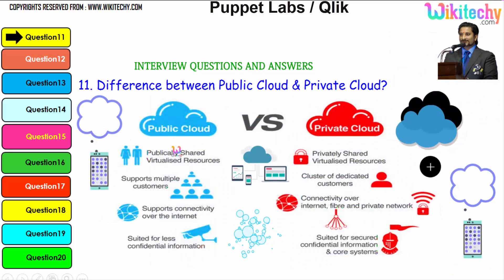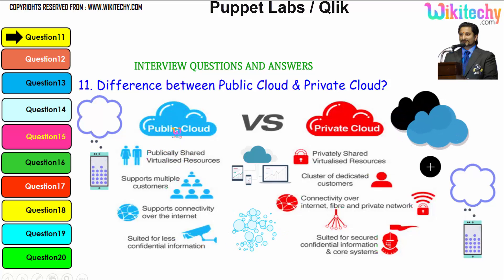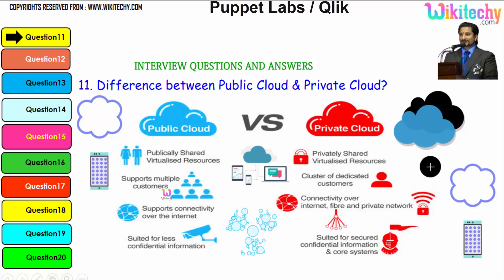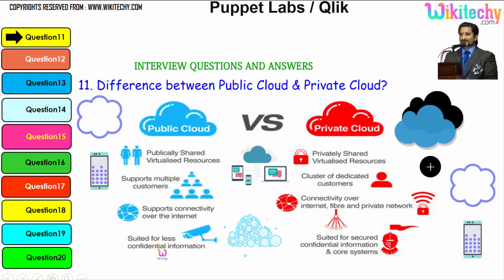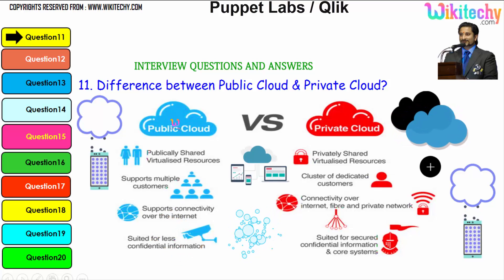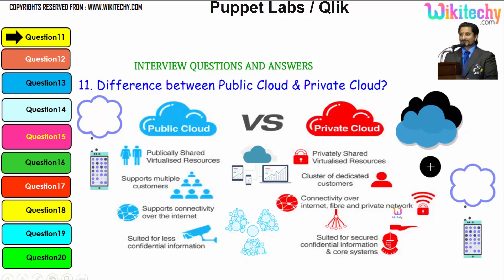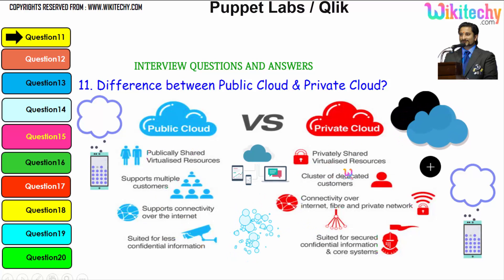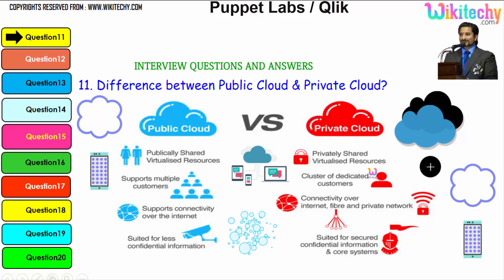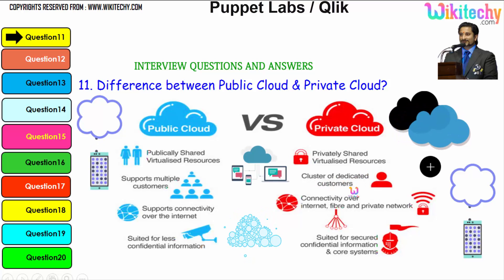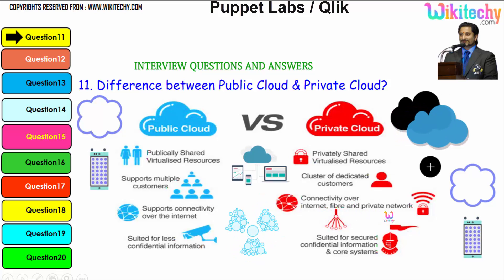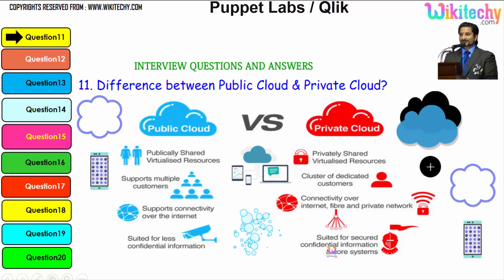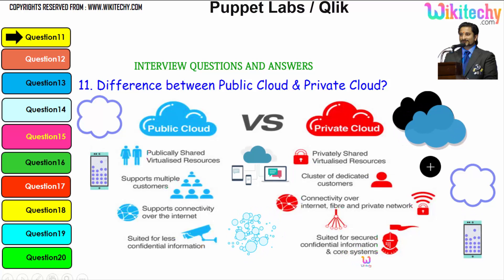Looking further, a public cloud uses publicly shared virtual resources, supports multiple customers, supports connecting to the internet, and is suited for less confidential information. Over a private cloud, you have privately shared virtualized resources, a cluster of dedicated customers, connectivity to the internet via fiber and private network, and it is suited for secure and confidential information and core systems.